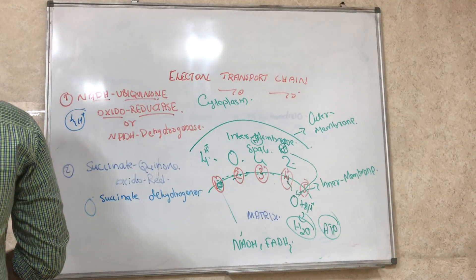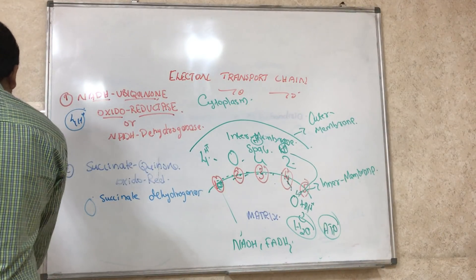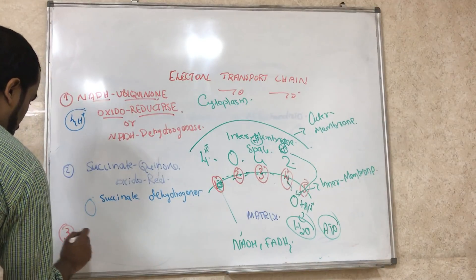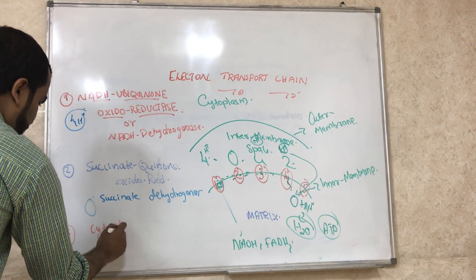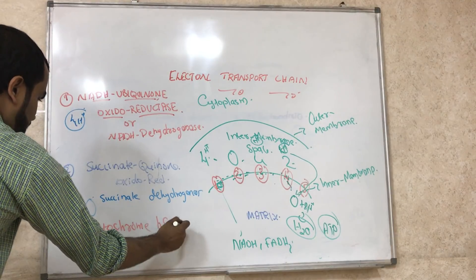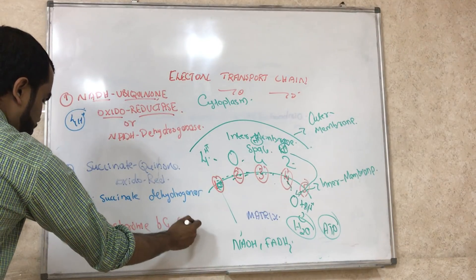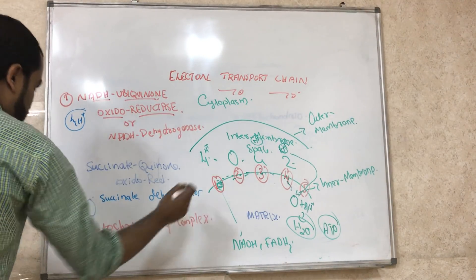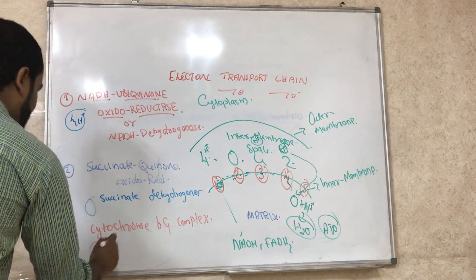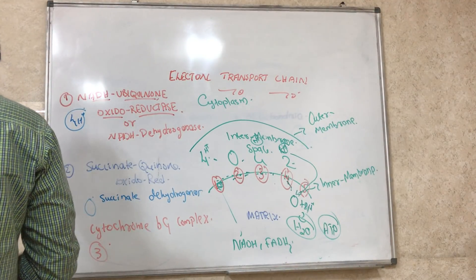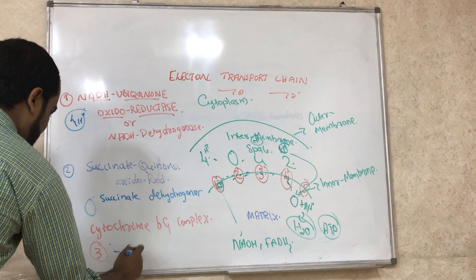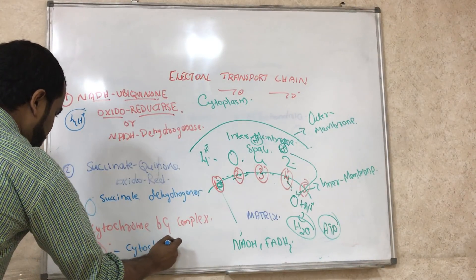The third complex is called cytochrome BC1 complex. Its other name is cytochrome oxidase 2. It pumps 3 H+ out.